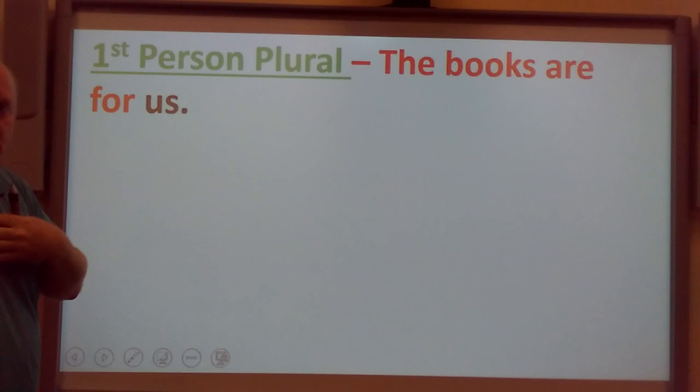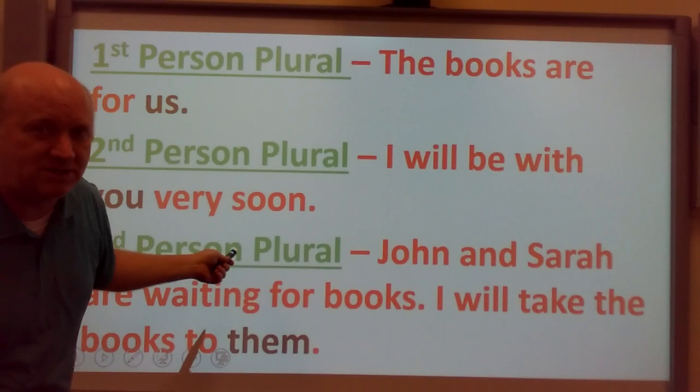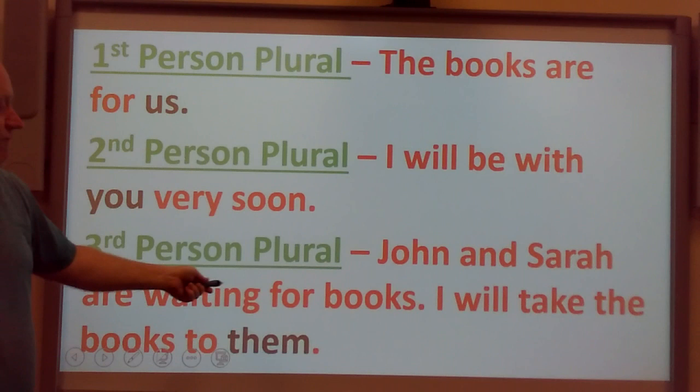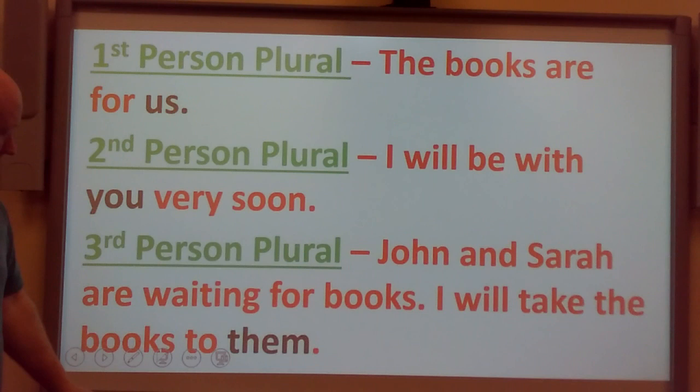First person plural: 'The books are for us.' Remember, plural means two or more. Second person plural: 'I will be with you very soon.' As we see, 'you' doesn't change. Third person plural: 'John and Sarah are reading books. I will take the books to them.' 'Them' is a plural pronoun meaning two or more, referring to John and Sarah, which are objects.